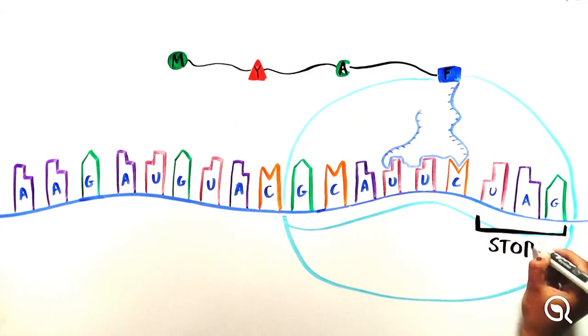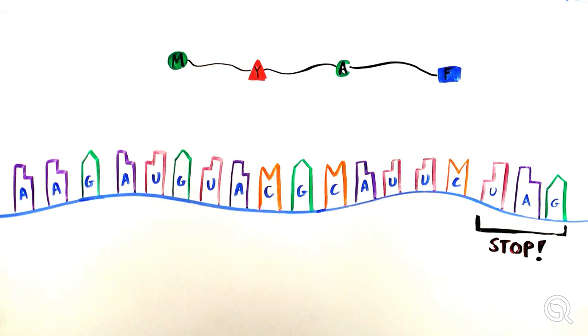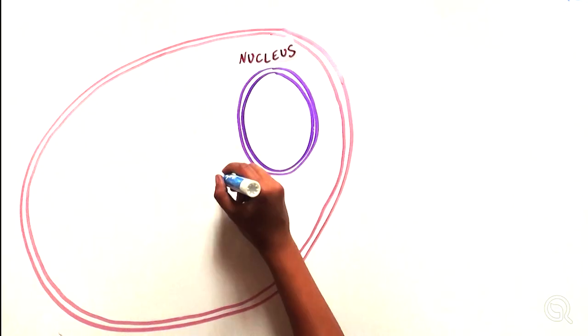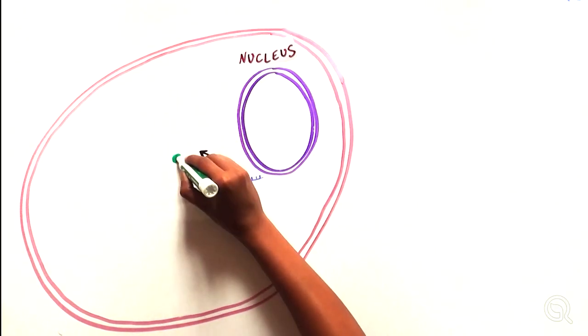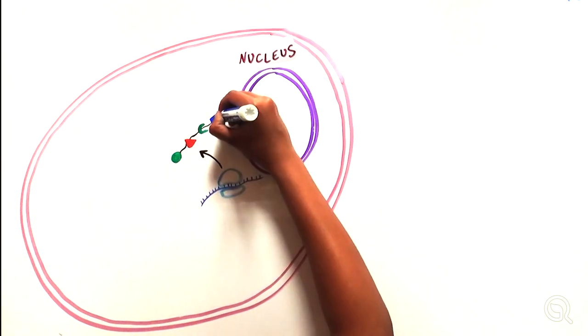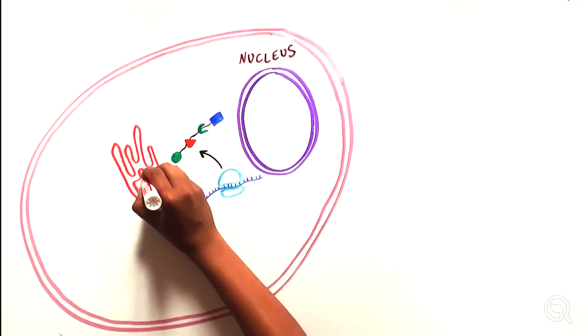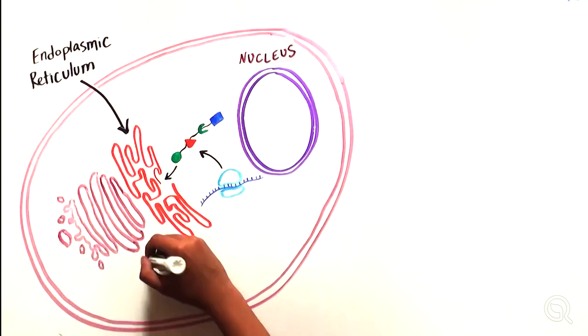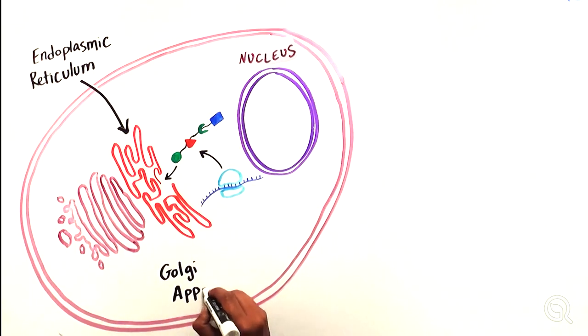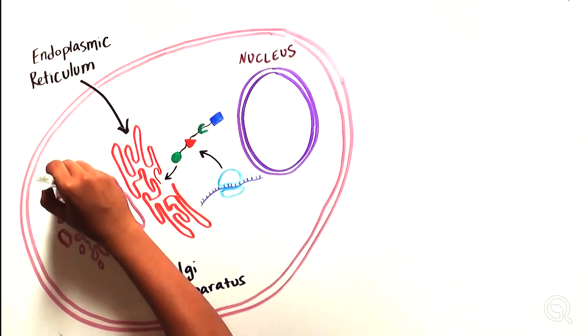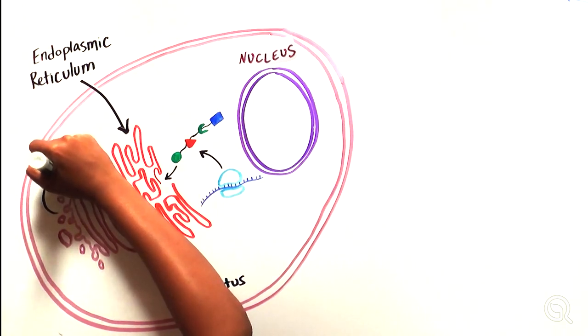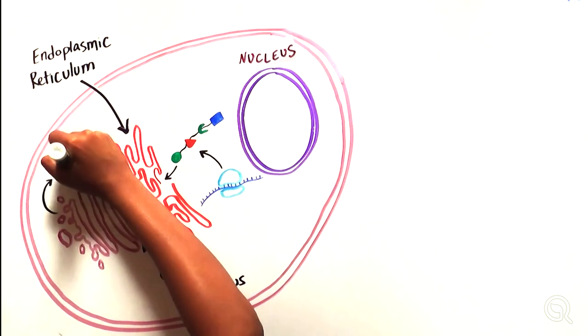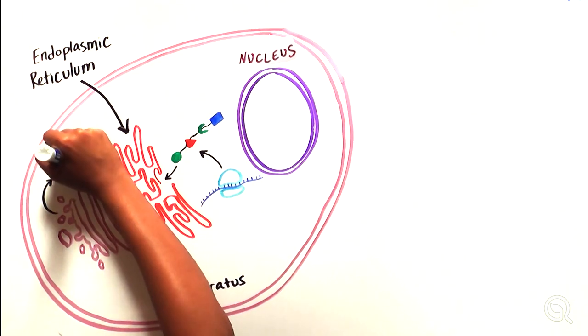This process continues until the ribosome hits one of the three stop codons, which signals the ribosome that it should stop translating. Once a stop codon is reached, the resulting amino acid chain is released from the ribosome and usually transported through organelles known as the endoplasmic reticulum and the Golgi apparatus. These organelles help fold the amino acid chain into the correct shape, as well as complete any additional modifications needed to form a complete and functional protein.